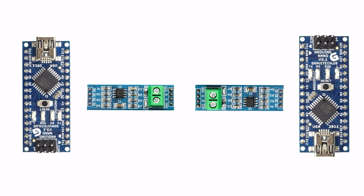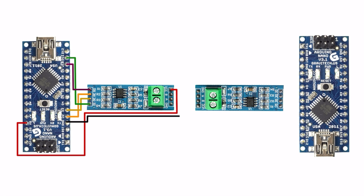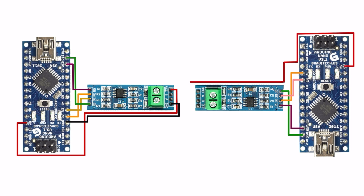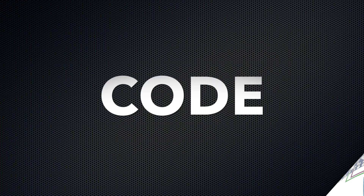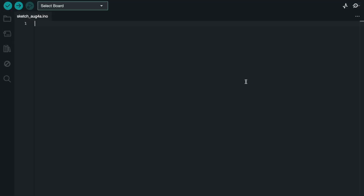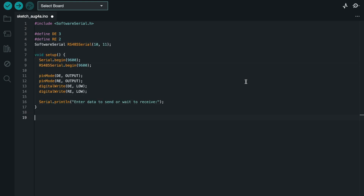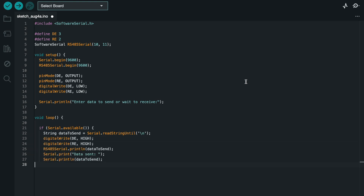Now I will do the connection with the Arduino Nano microcontroller. The connection is complete. Now let's look at the code. First, open the Arduino IDE software and define the DE and RE pins — pin number 10 and 11.